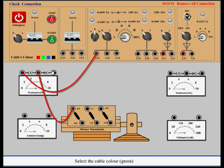Select the cable color green. Connect EC potential with P1. Connect L2 with P1.